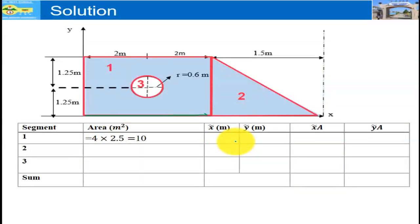What about x tilde or the x coordinate from the origin? From origin, that means b over 2. B is 4m, b over 2 is 2m. Therefore x tilde is 2m. What about y coordinate from the origin? From this point to h over 2, h over 2 is 1.25, so y tilde is 1.25. This column and this column is simply multiplying x tilde with the area and y tilde with the area.